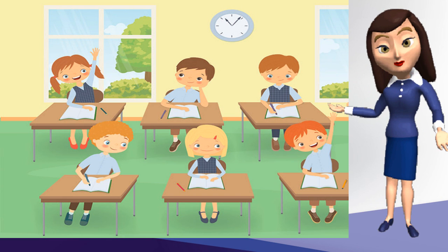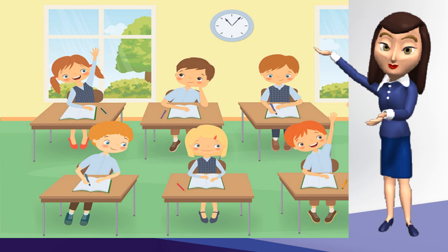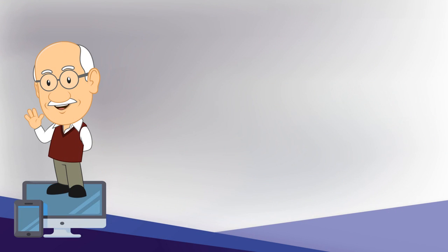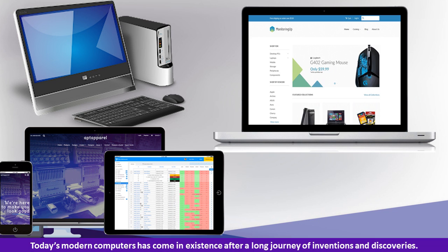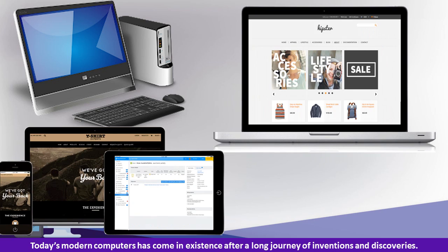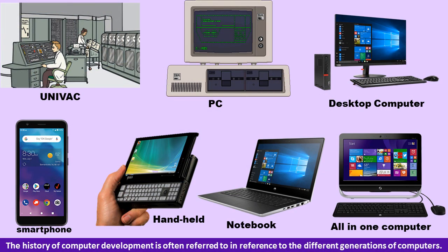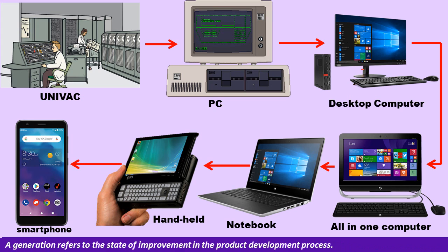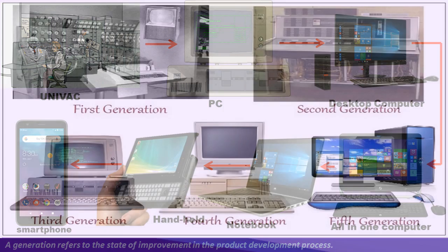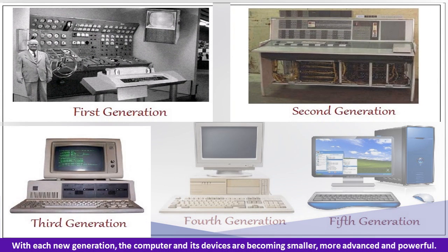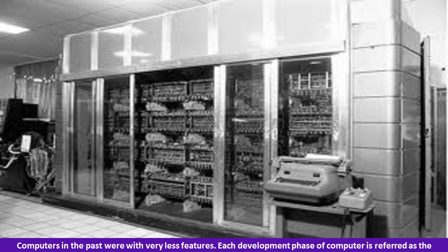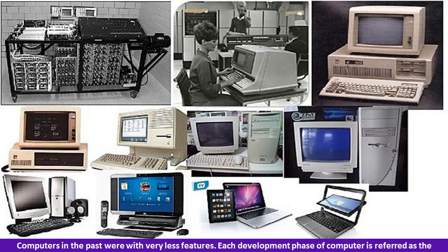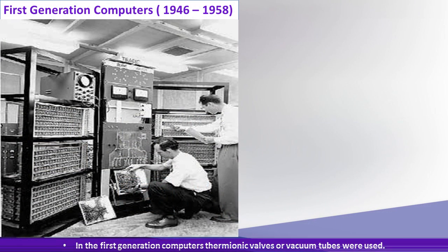Generations of computers? Yes, you heard it right. Just like we have the generation of people in our family like a grandfather, father and children, similarly the computer also has different generations. Today's modern computers have come into existence after a long journey of inventions and discoveries. The history of computer development is often referred to in reference to the different generations of computers. A generation refers to the state of improvement in the product development process. With each new generation, the computer and its devices are becoming smaller, more advanced and powerful. Each development phase of the computer is referred to as the generation of computer.